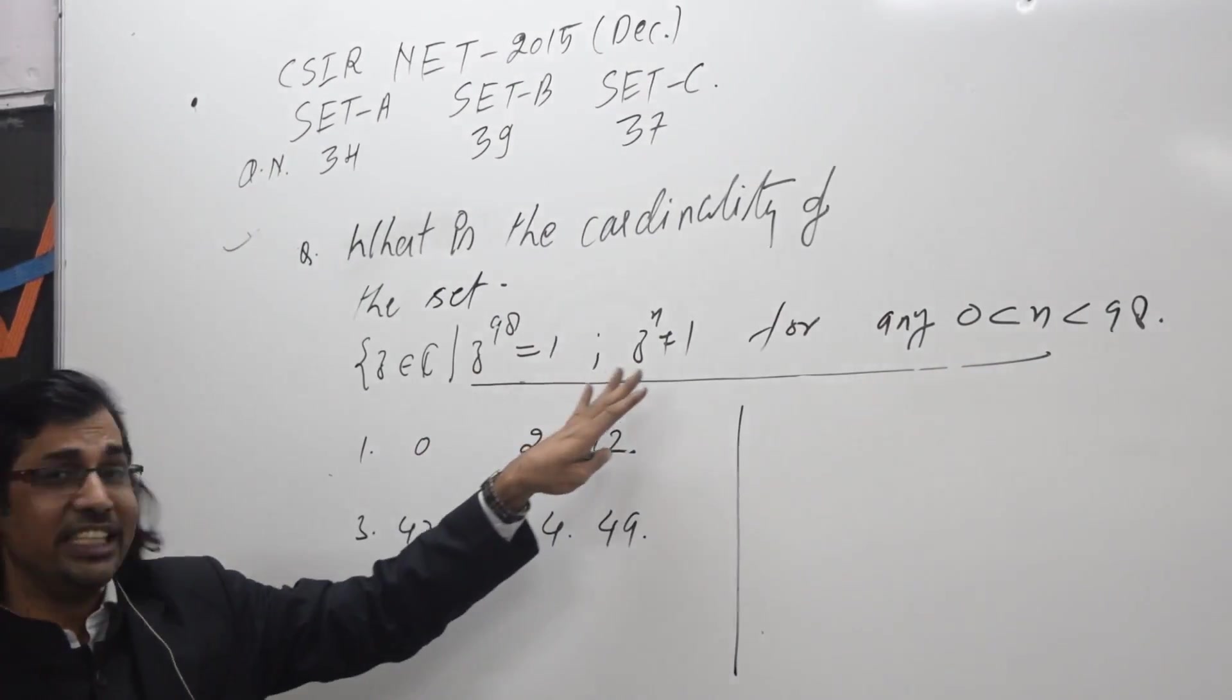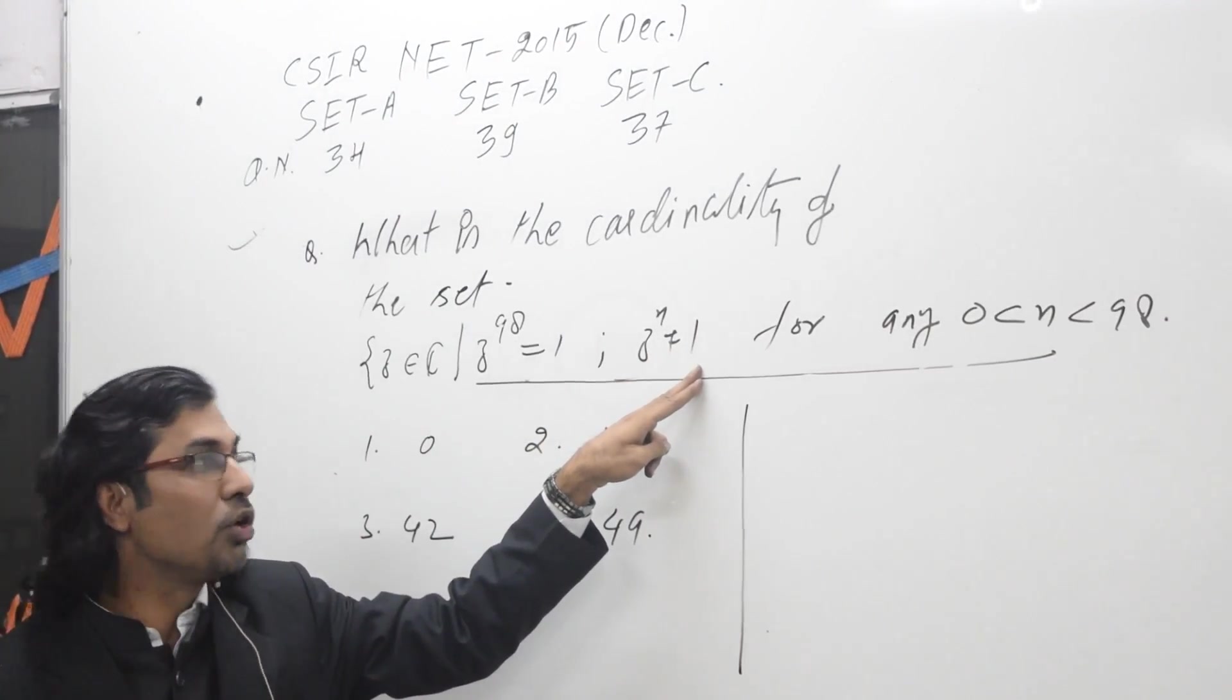Now in C, with respect to multiplication, non-zero complex numbers form a group.